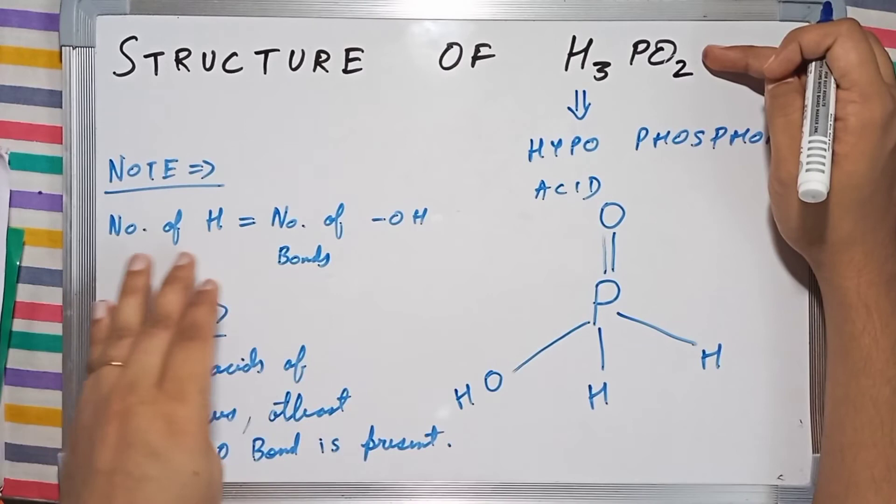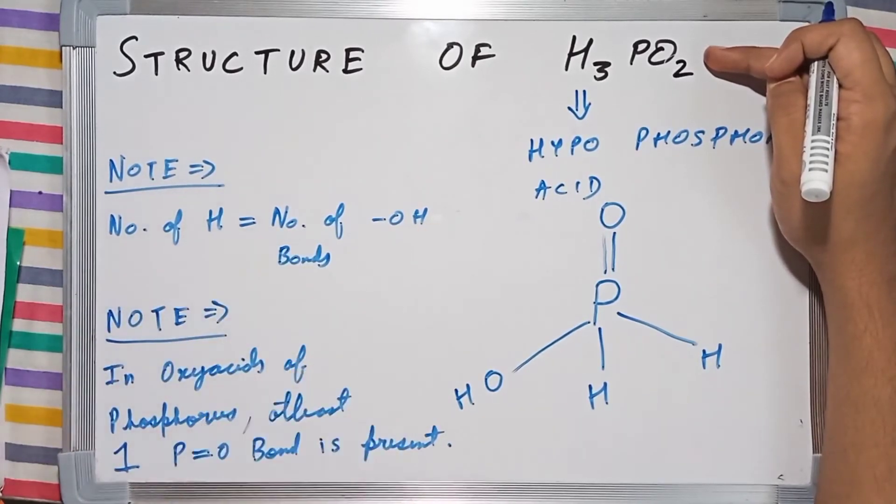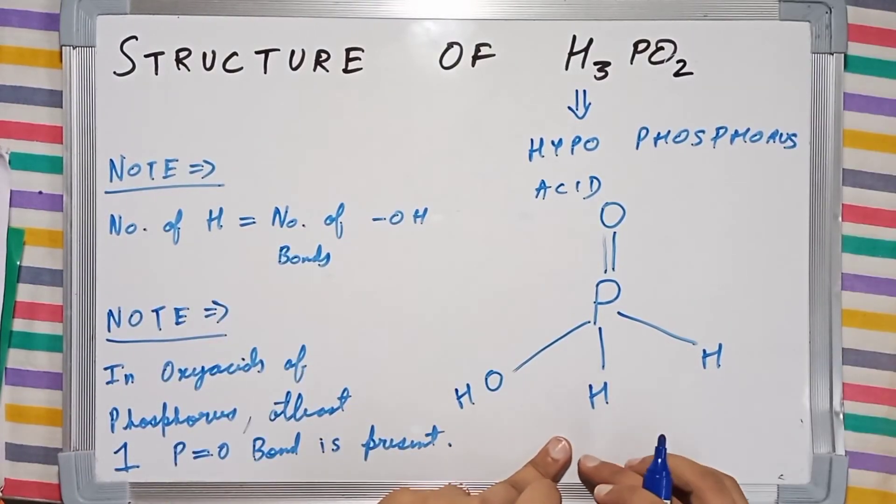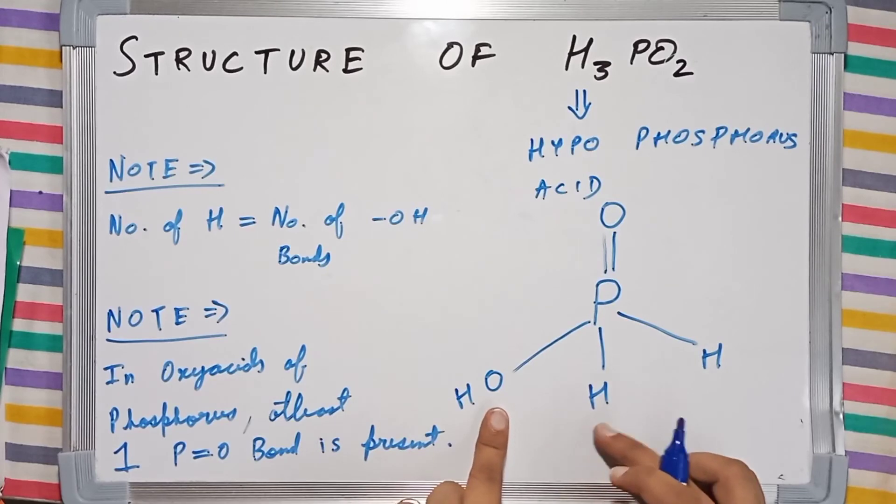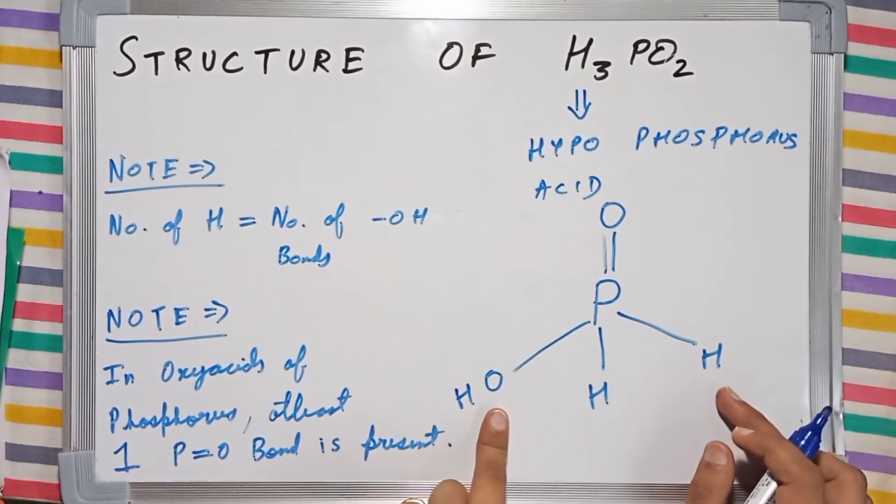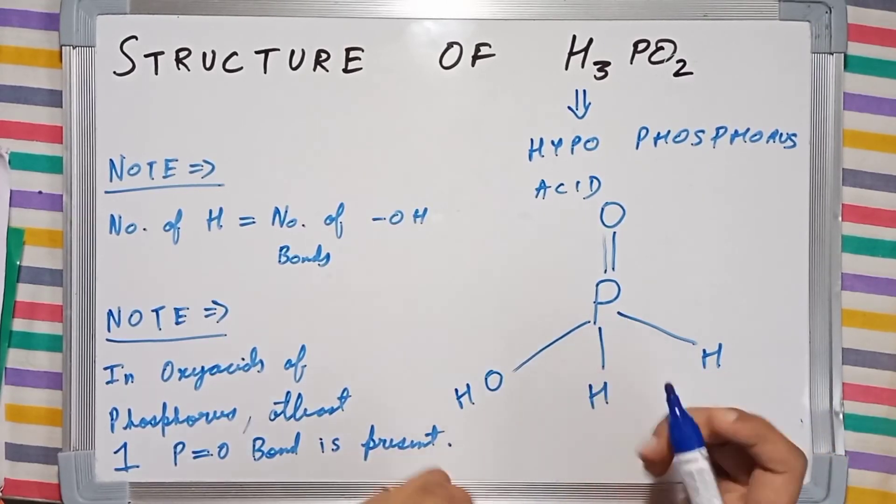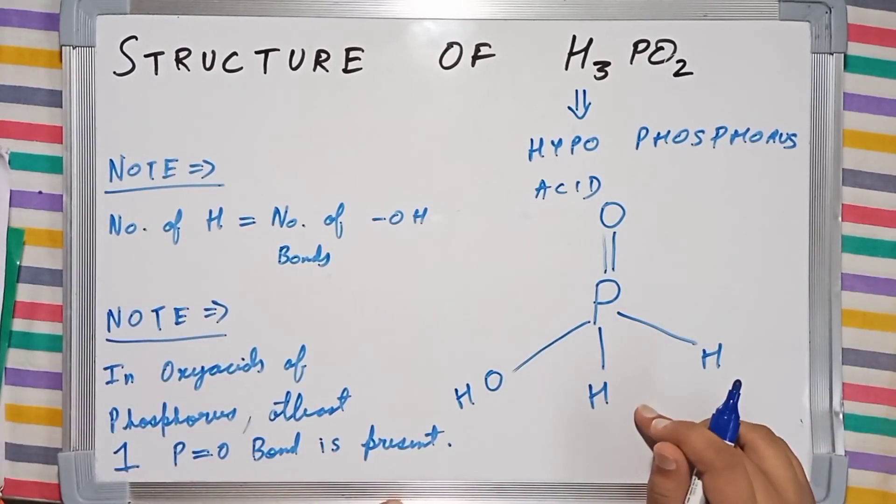So we drew just a single OH bond and we didn't have any more oxygen atoms. So we simply drew two hydrogen atoms with single bonds to phosphorus. That was the structure of H3PO2.